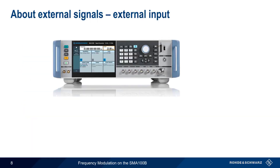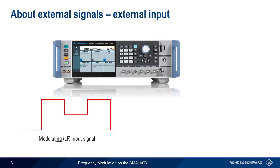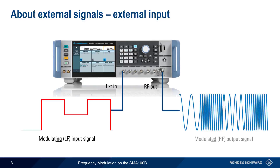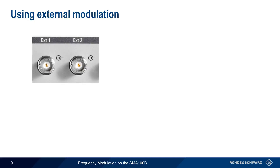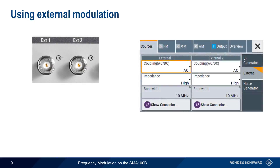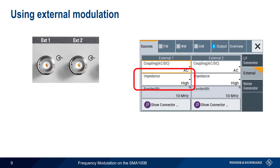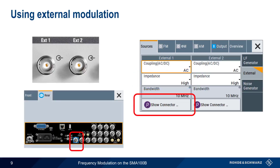In addition to using the internal LF generator, another way the SMA can generate frequency modulated signals is by using an external low-frequency signal as the modulation source. This external source is then used by the SMA to create the modulated RF output. In this case, the input or modulating waveform does not need to be regular or periodic. The SMA has two connectors for external modulation sources: external 1 and external 2. For each external connector, we can specify the coupling — AC or DC — as well as the impedance. If you're unsure about which connector to use, the Show Connector button will open up a graphical view of the SMA with the corresponding connector highlighted.